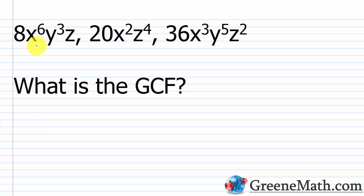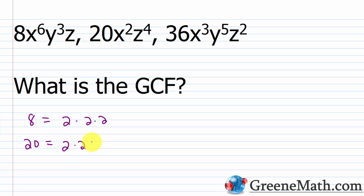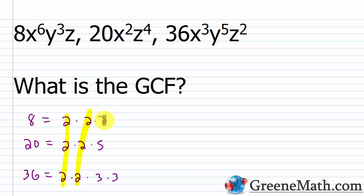Let's look at another example: 8x to the 6th power y cubed z, 20x squared z to the 4th, and 36x cubed y to the 5th z squared. For the numbers: 8 factors into 2 cubed; 20 factors into 2 times 2 times 5; and 36 is 9 times 4, which is 3 times 3 times 2 times 2. What's common to everything? Two copies of 2 — that is 4 — are common to everything. So the GCF for the numbers 8, 20, and 36 is 4.